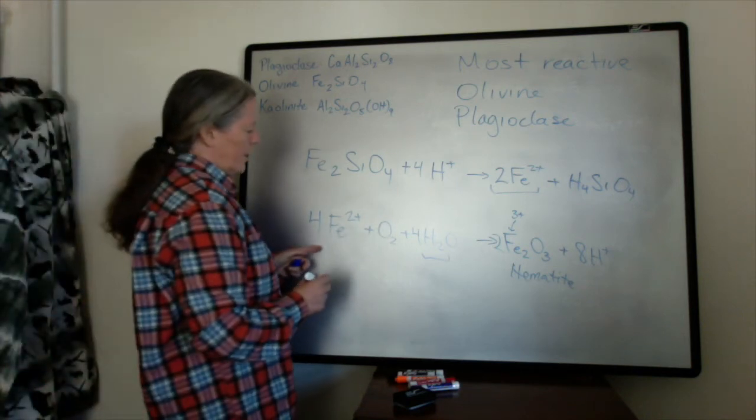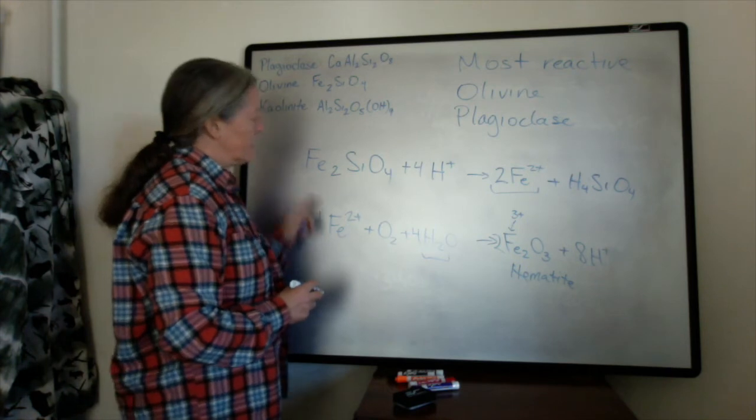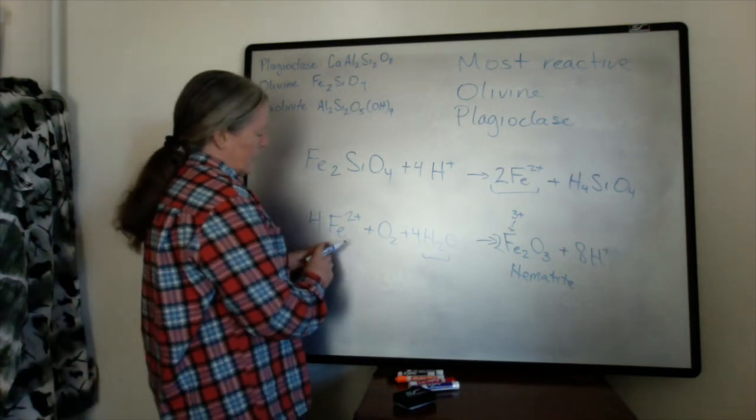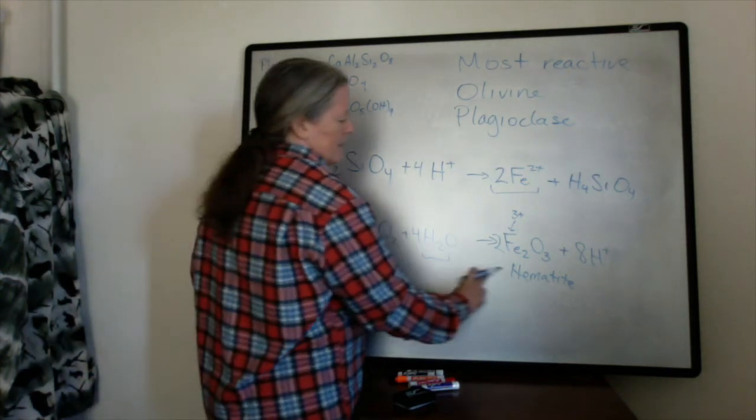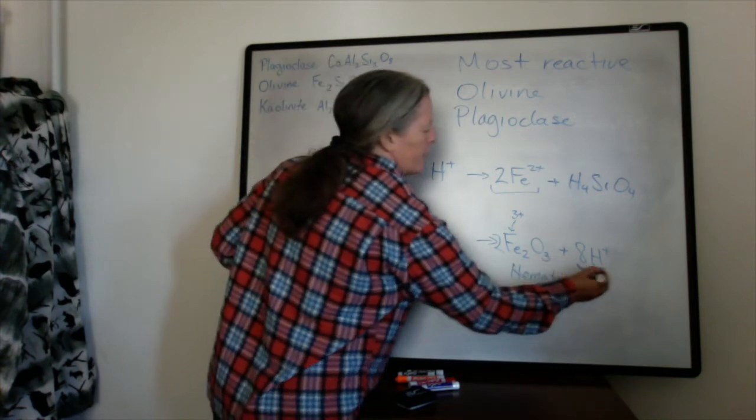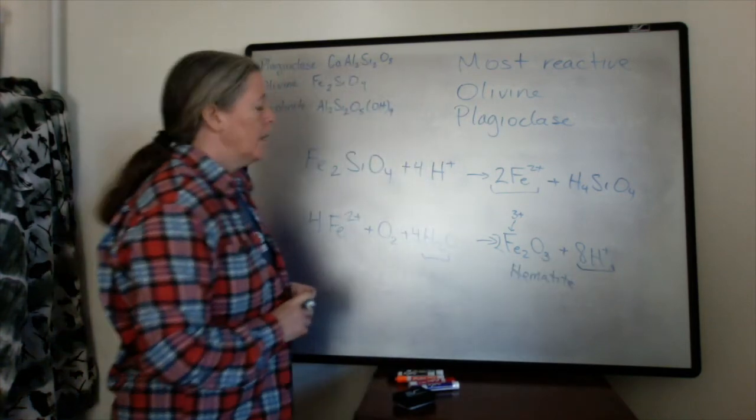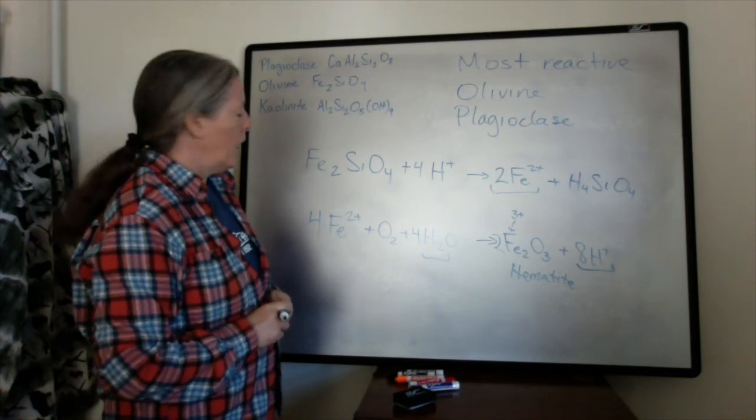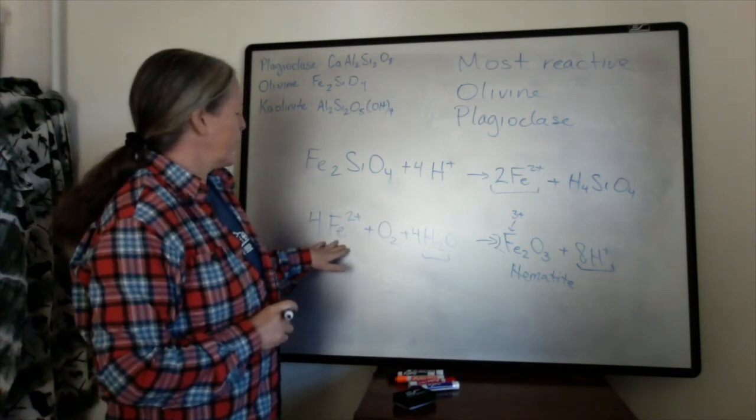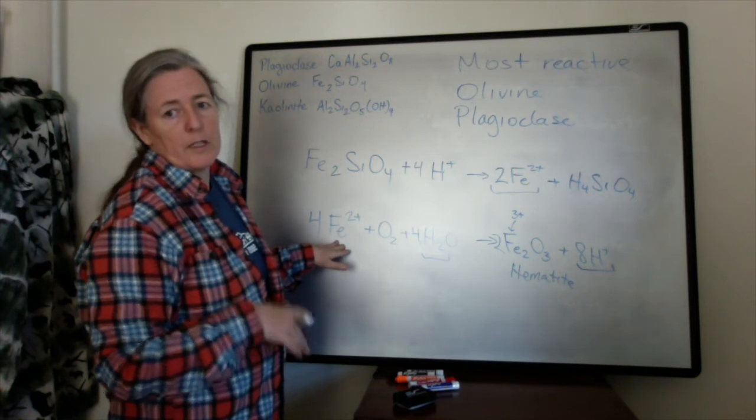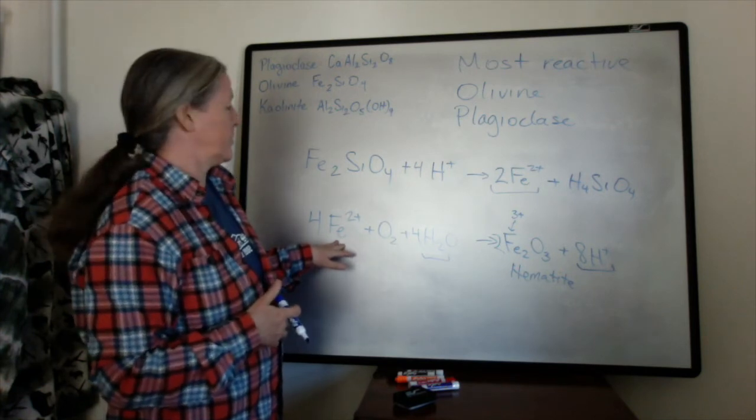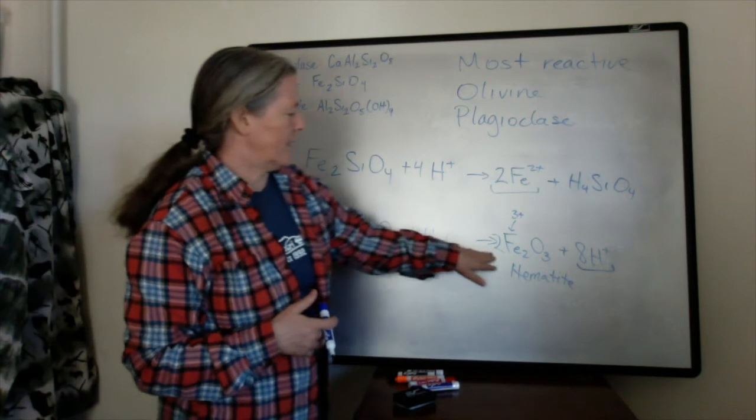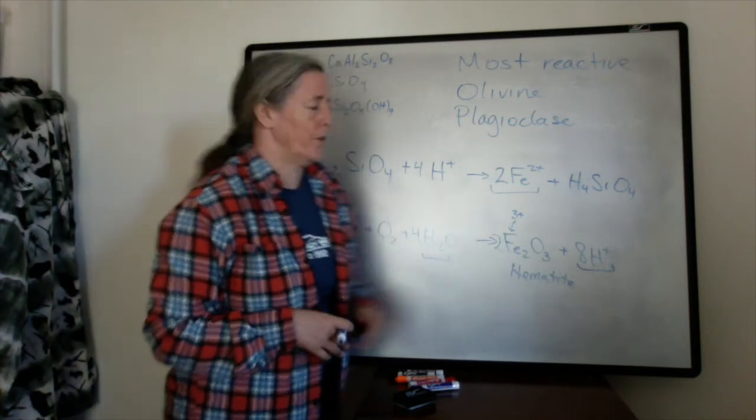So one of the things that happens that's really interesting in this process is that when you oxidize the iron you produce acidity. Some of you might have heard about the problems with acid mine drainage. That occurs when you expose iron 2 plus to water and oxygen at the surface and it oxidizes to produce all these protons.